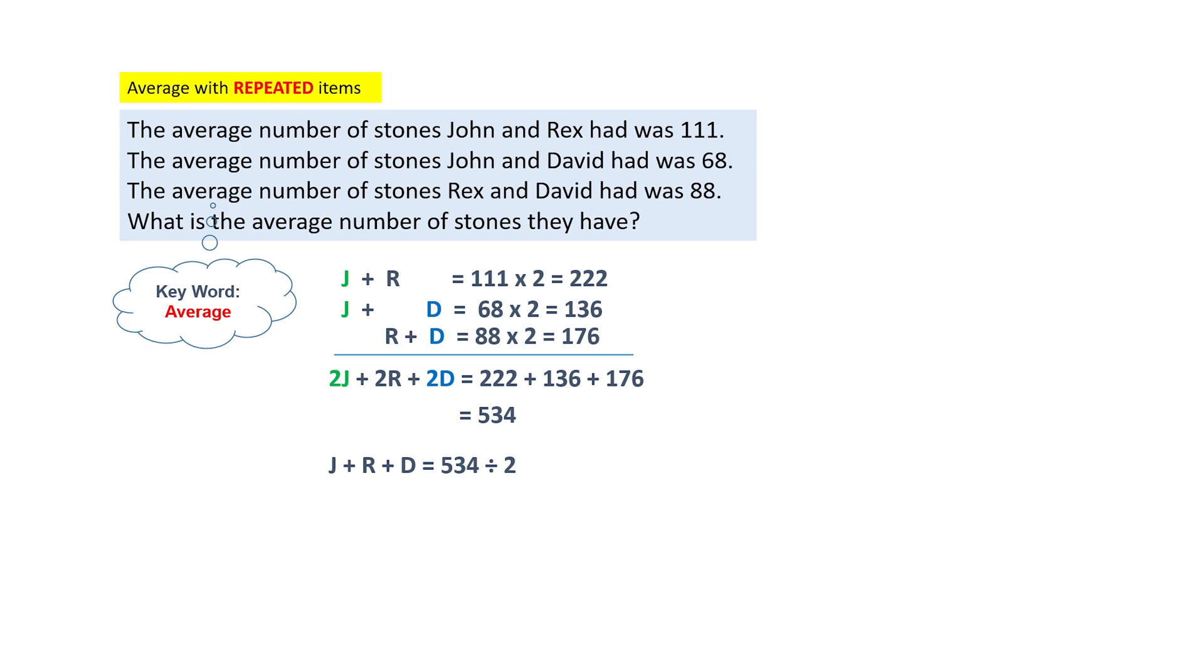Let's read the next question again. It asks, what is the average number of stones they have? So the final step you will need to do is to take 267 divided by the three boys, and that will give you the answer 89.